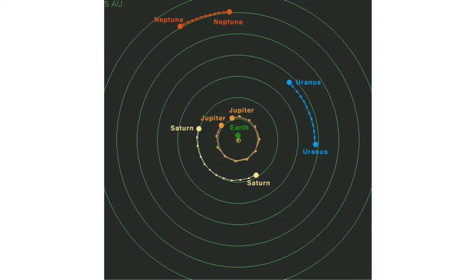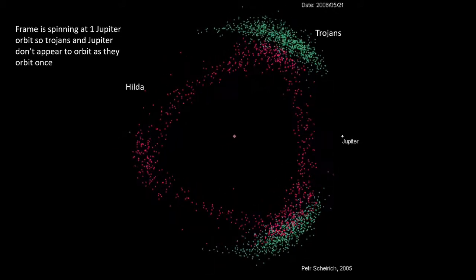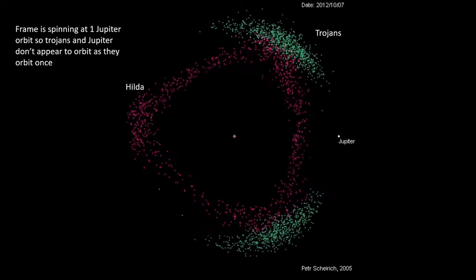The asteroid belt is one such place that experiences a multitude of resonances. An asteroid can complete an exact number of orbits for every one orbit of Jupiter, and these are expressed as a ratio. For example, a 1 to 1 ratio would mean that for every one orbit an asteroid completes, Jupiter also completes one orbit.